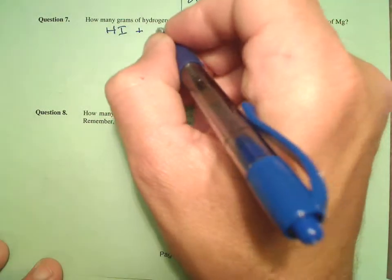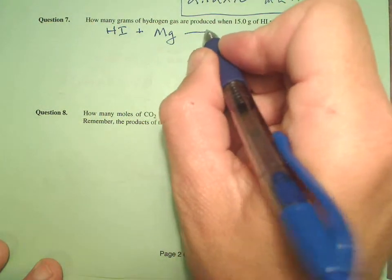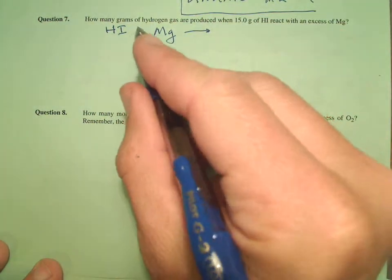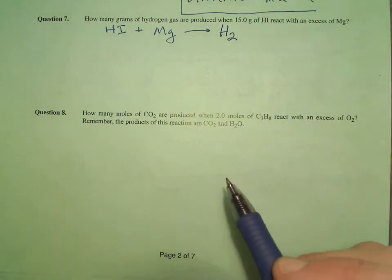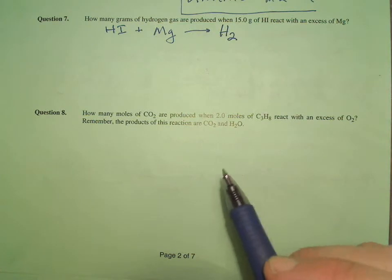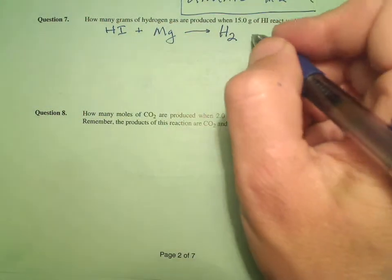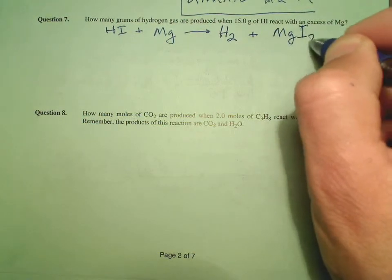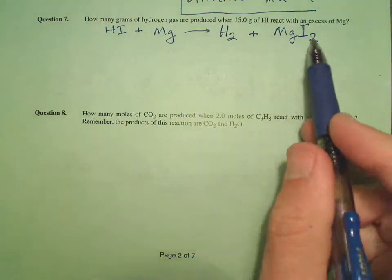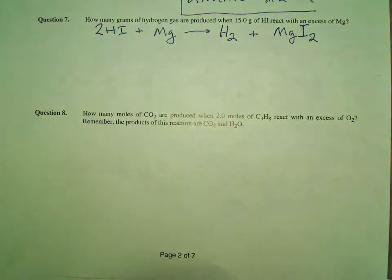So I know that HI reacts with magnesium to form hydrogen gas, H₂. And we know that this is a single replacement kind of redox reaction, so the magnesium is going to team up with the iodide and the hydrogen that's produced, so the other product is magnesium iodide. I just need to balance it — two H's, two I's — so if I put a two in front of HI, that should be good.